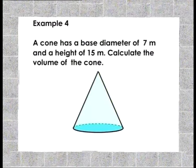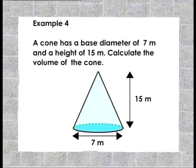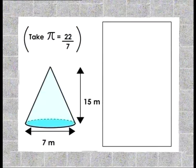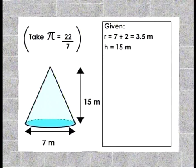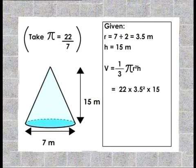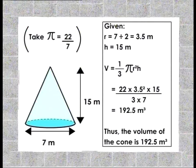Example 4: A cone has a base diameter of 7 meters and a height of 15 meters. Calculate the volume of the cone. Take π = 22/7. Solution: Given R = 7/2 = 3.5 m, H = 15 m. V = (1/3)πR²H = (22 × 3.5² × 15)/(3 × 7) = 192.5 cubic meters.